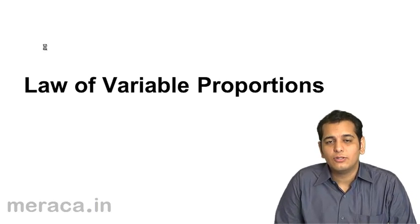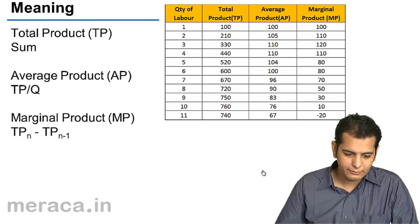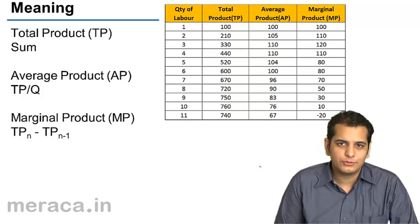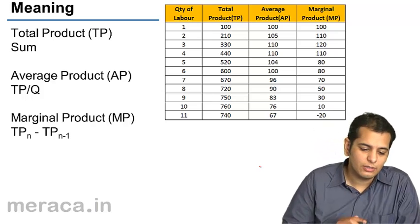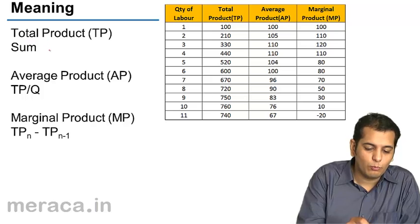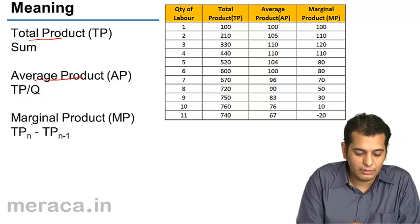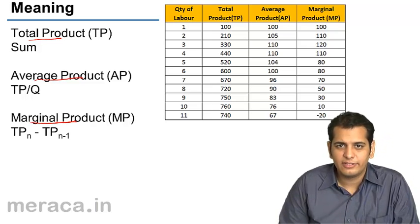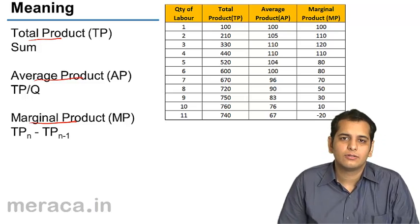Let's study the Law of Variable Proportions. But before learning that, let us first learn what is Total Product, Average Product, and Marginal Product. Let's get our concepts clear on these three concepts.